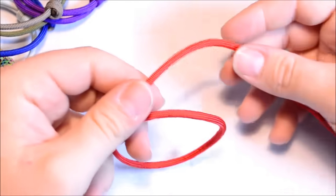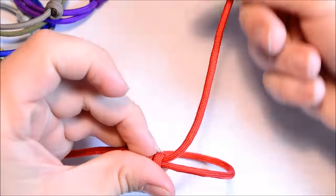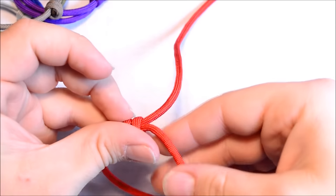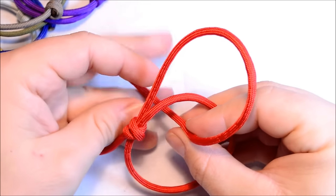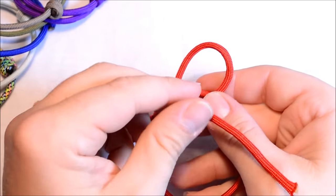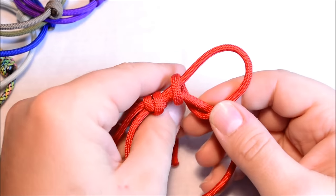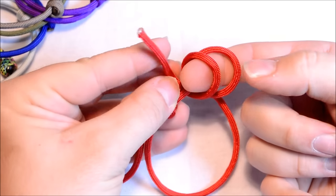Go down through again and out the back - this is going to give you your two loops just like that. Take your working end and go through those two loops.